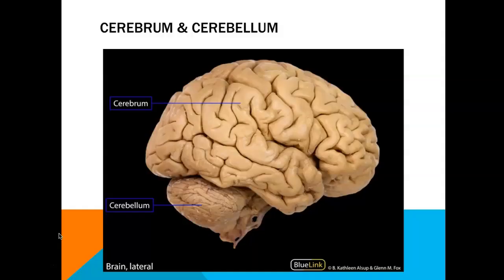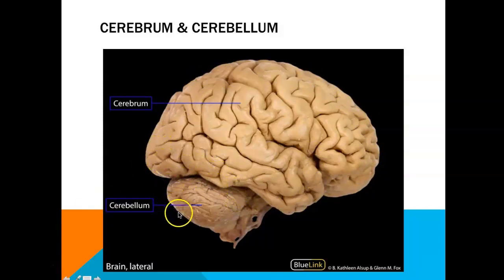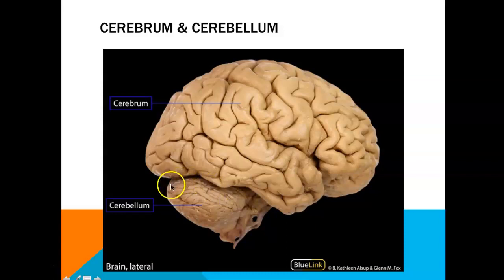Before we start discussing the structures in your lab manual, I wanted to bring your attention to the difference between the cerebrum and the cerebellum. The cerebrum is the main mass of the brain that you typically think of, but we also have this smaller little brain back here called the cerebellum. That term literally means little brain, and moving forward I did my best to go in the order of the structures in your lab manual.